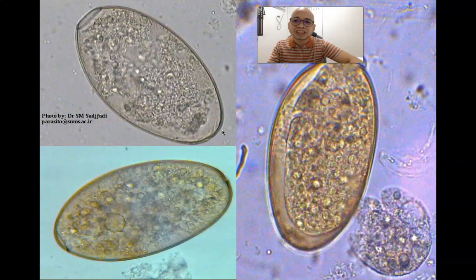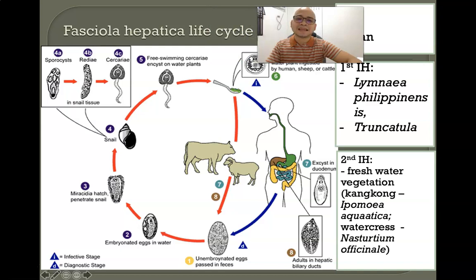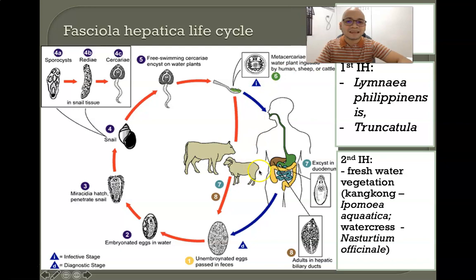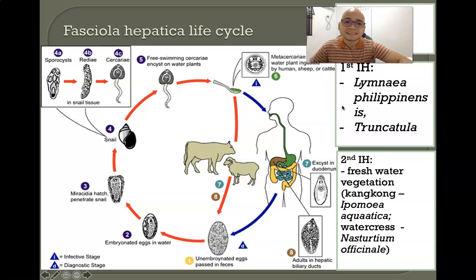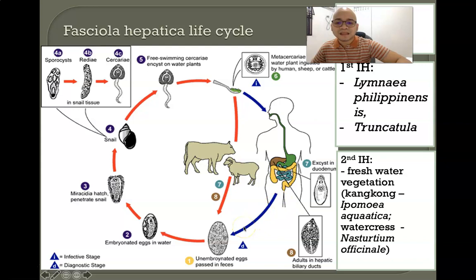In the life cycle, the definitive hosts are humans, but reservoir hosts include cattle and sheep that feed on aquatic vegetation. The first intermediate hosts are snails such as Lymnaea philippinensis or truncatula species. When an infected human defecates in the river, unembryonated eggs are passed out.